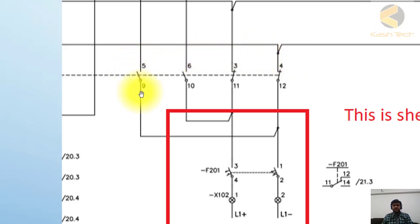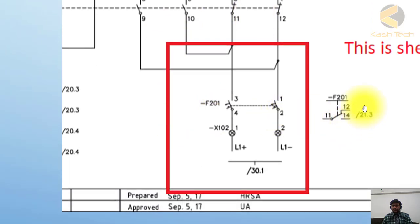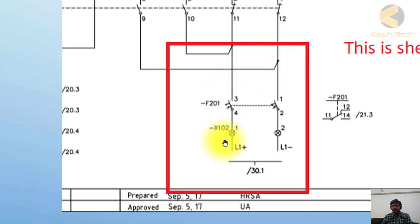This is a changeover scheme — if one supply fails, it automatically changes over to the second supply. This is the auxiliary contact of the MCB, which is a changeover contact. If you want to see where this contact is connected, you can go to sheet 21.3. This is the contact of F201.